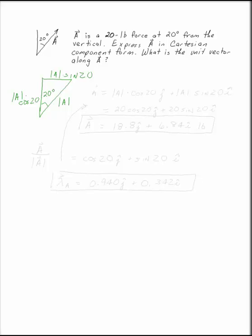So we can write A as the magnitude of A times cosine 20 up, or positive J, plus the magnitude of A times sine 20, I, up and to the right.